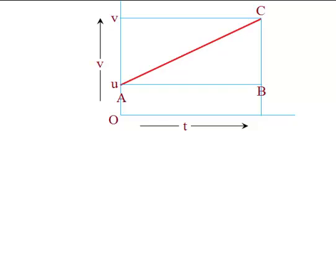For the slope to be uniform, or acceleration to be uniform, we can say that the line on the VT graph should be a straight line. If the VT graph is not a straight line, then we can confirm that it is not uniformly accelerated motion. But here, we are talking of uniformly accelerated motion, for which we have got the straight line.